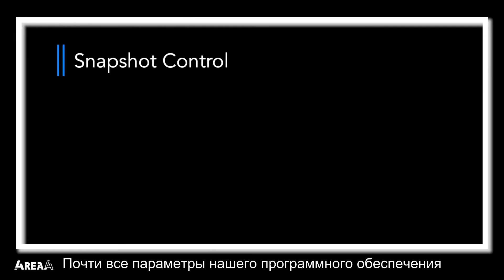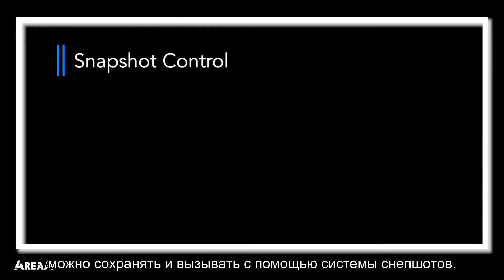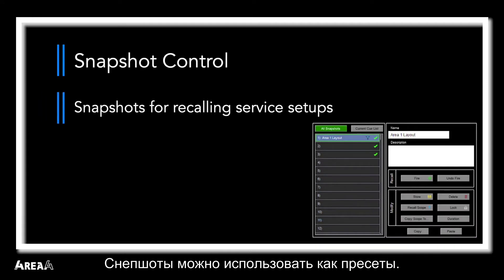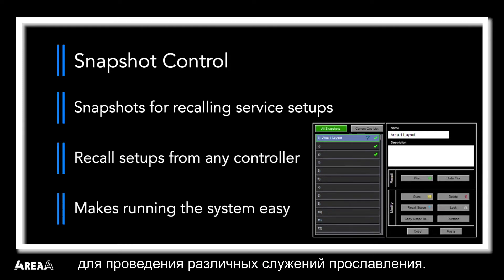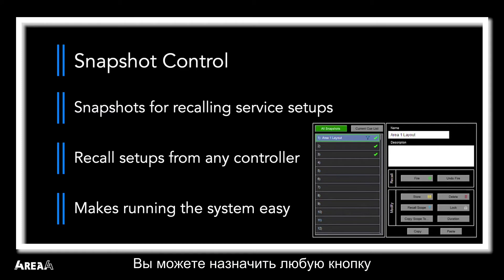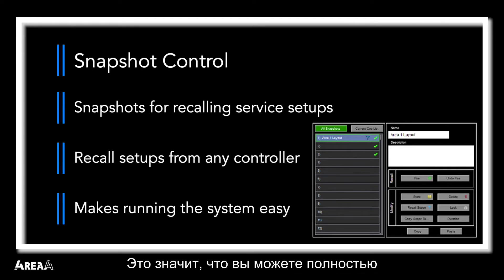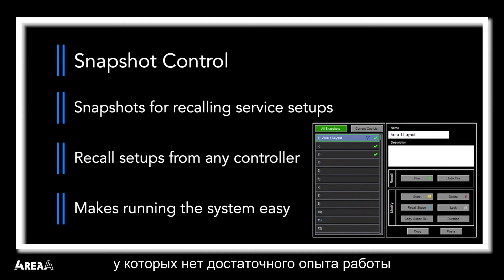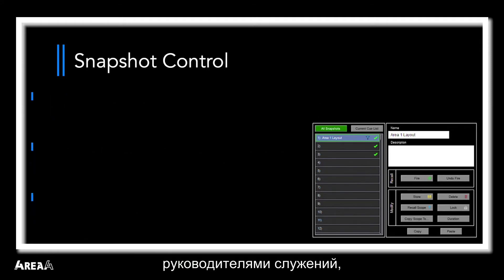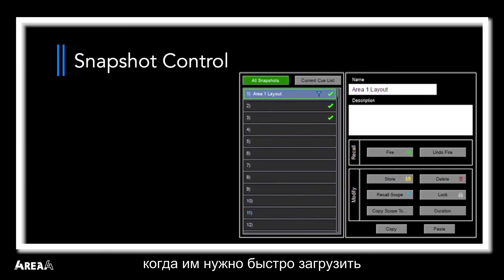Almost every parameter in the software can be saved and changed by our snapshot system. Snapshots can be used like presets — you can have multiple snapshots saved in your system and fire them as needed for the different worship services you're holding. You can assign any softkey on the engine or on one of the controllers to fire different snapshots for different service types. This means that you can completely change the layout of the engine with the press of a button. This is essential for systems likely to be run by volunteers who may have little to no experience with audio systems, or by facility directors that need to quickly recall a different configuration.